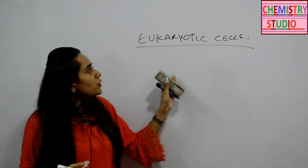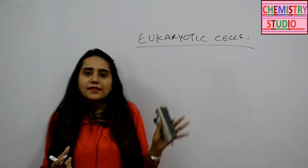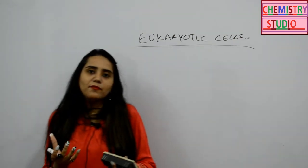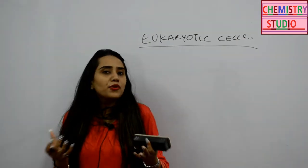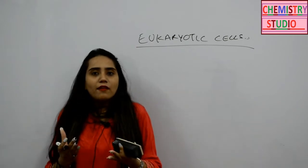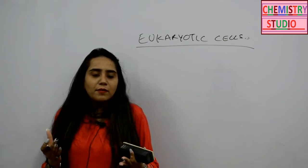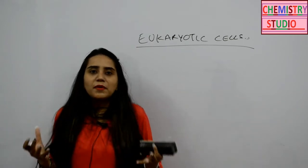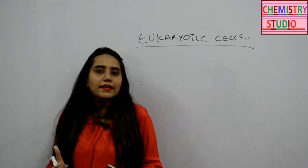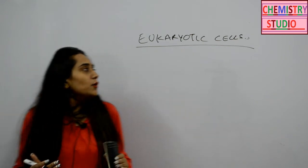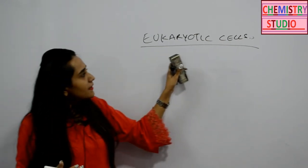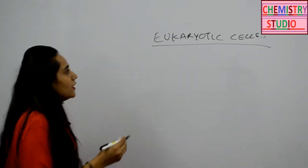Also, eukaryotic cells have a nucleus which is surrounded by nuclear envelopes, whereas prokaryotic cells don't have nuclear envelopes. The genetic material — the DNA — is scattered inside the cytoplasm. So first of all, let's discuss about eukaryotic cells.